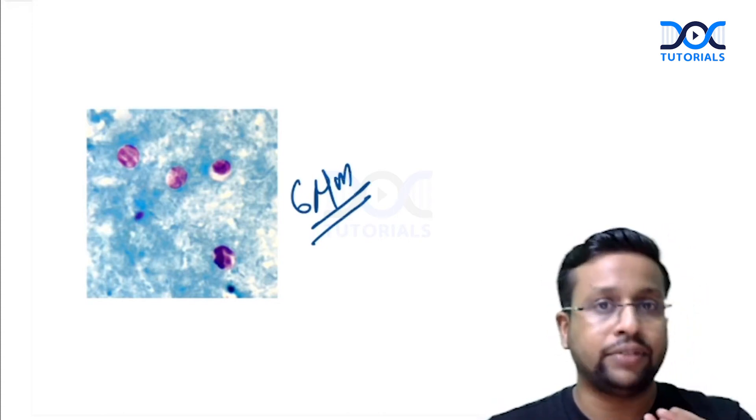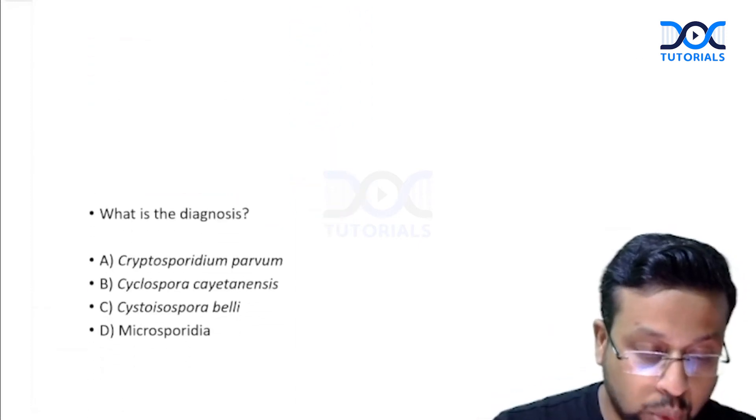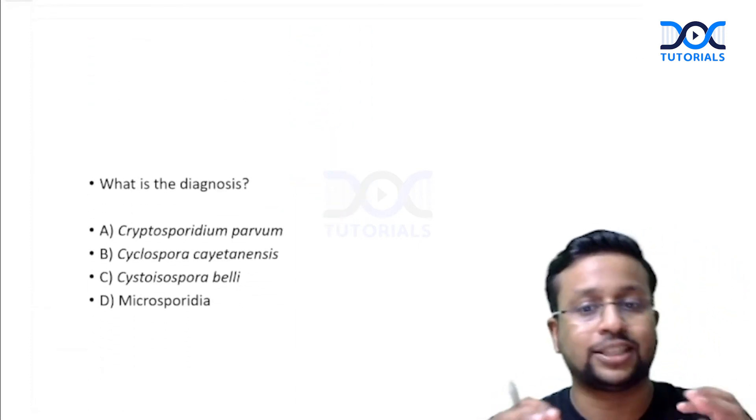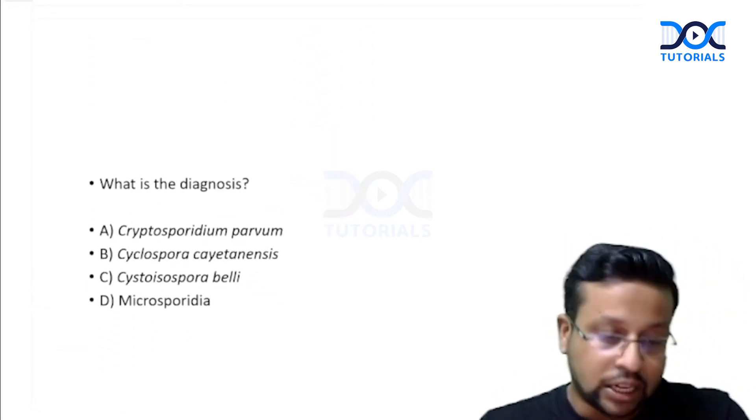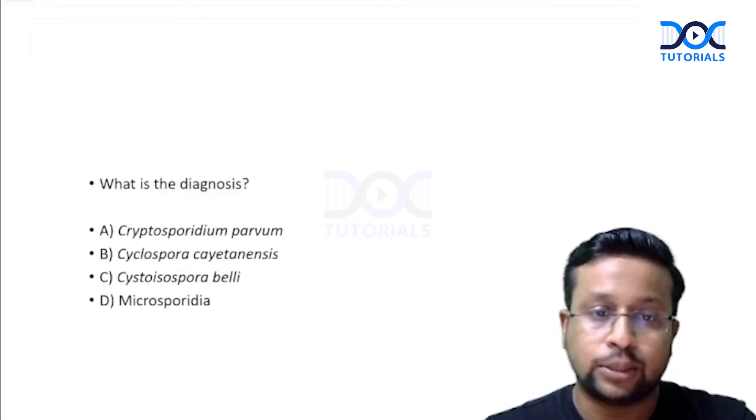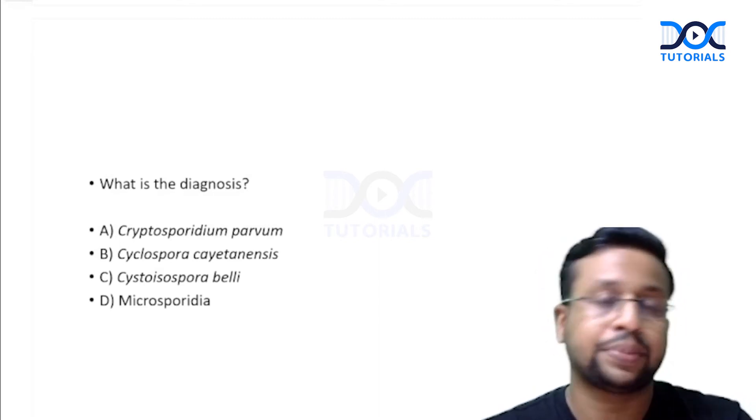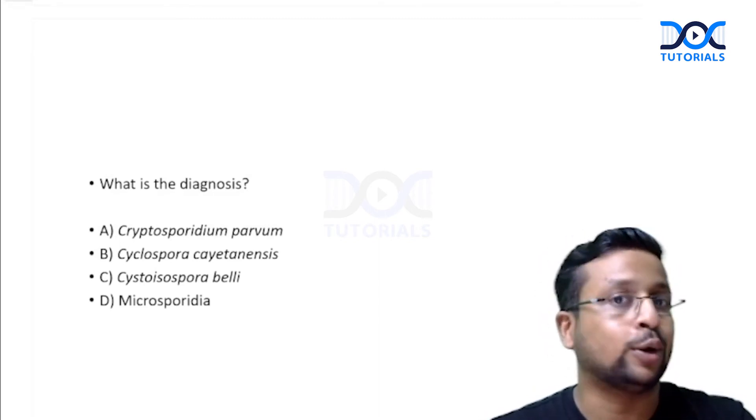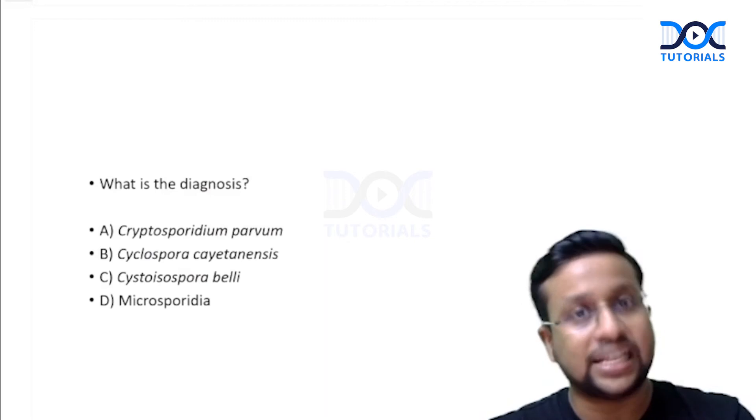Now this is a patient with HIV who is presenting with diarrhea. And if stool is showing acid fast structures like this, what is the diagnosis? The options given here are Cryptosporidium parvum, Cyclospora, Cystoisospora, and Microsporidia. All of these are parasites which can cause diarrhea in an HIV patient.